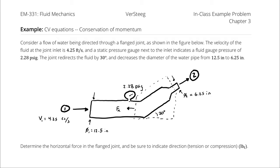Consider a flow of water being directed through a flanged joint as shown in the figure below. The velocity of the fluid at the joint inlet is 4.25 feet per second, and a static pressure gauge next to the inlet indicates a fluid gauge pressure of 2.28 psi. The joint redirects the fluid by 30 degrees and decreases the diameter of the water pipe from 12.5 inches to 6.25 inches. Determine the horizontal force in the flanged joint and indicate direction — tension or compression.